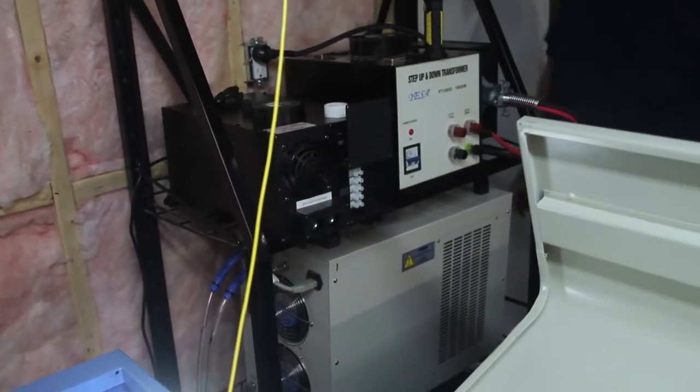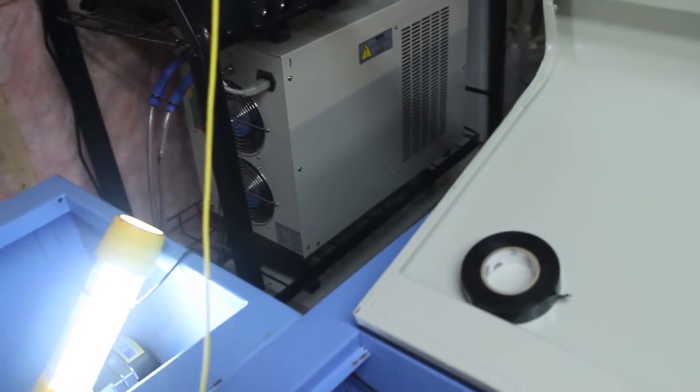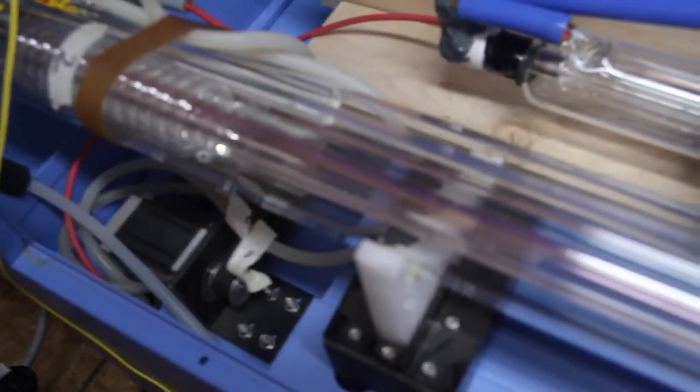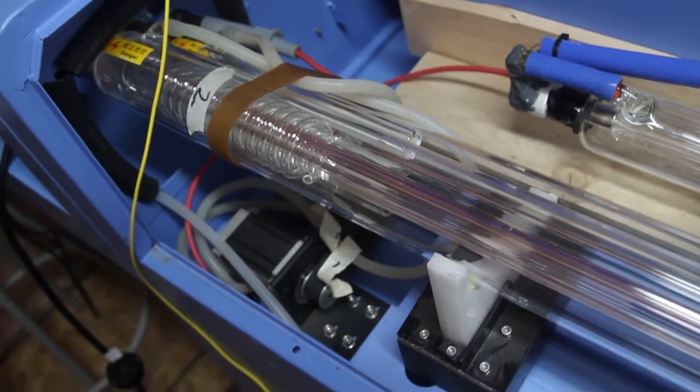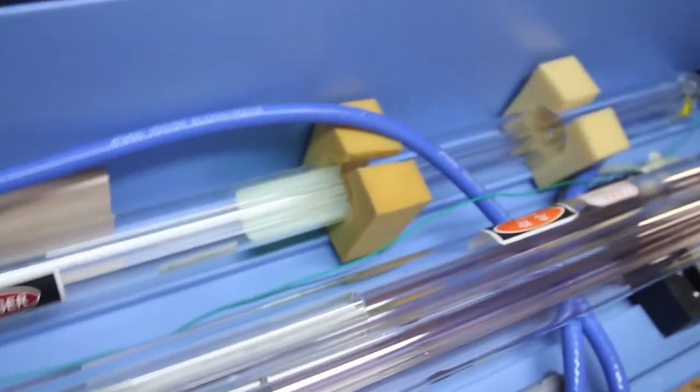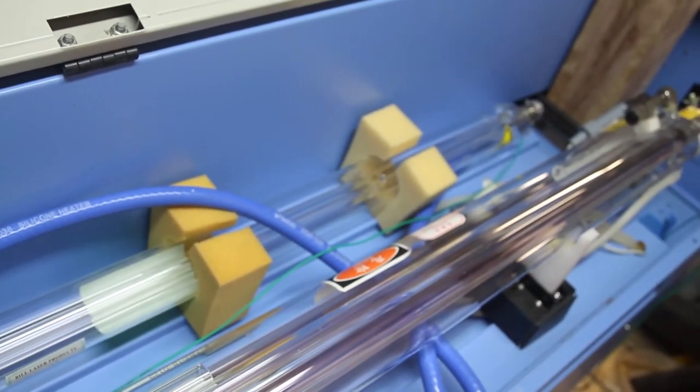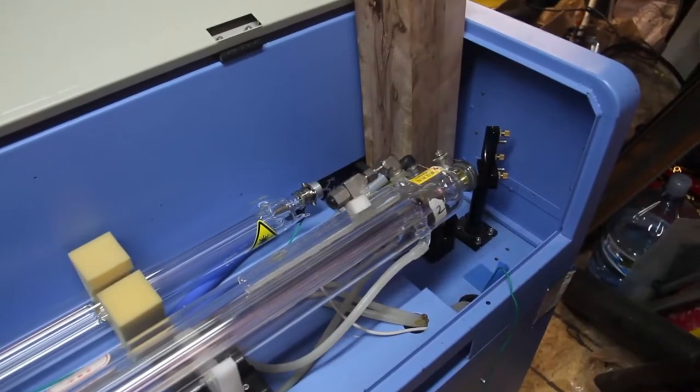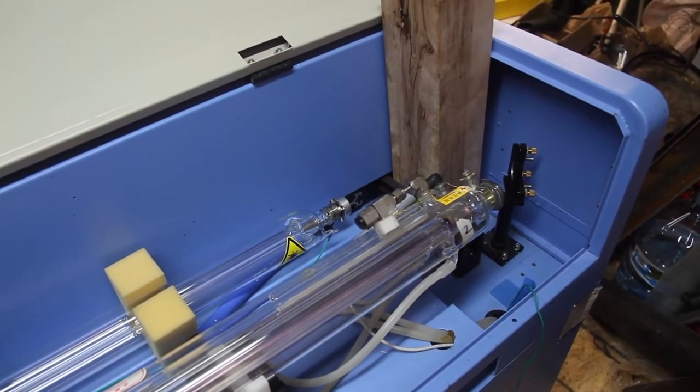First we have to plug in the voltage doubler and turn on the chillers. We need to activate the machine. Probably should unplug that power source. Okay, so this is the first test fire of what we believe to be the bad power supply. We're going to hit it at about 10% power. Go ahead.